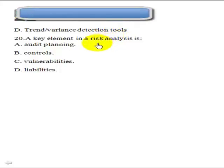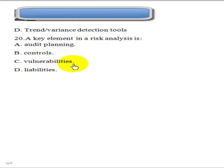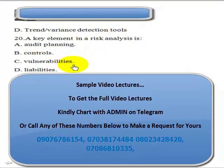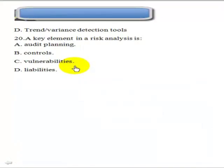Question 20: The key element in a risk analysis is vulnerability. This is a tricky question between control and vulnerability, but the answer is C — vulnerability — because before you can talk about control, you must first identify vulnerability. Risk analysis starts with an inventory of assets, then identifying the vulnerabilities of those assets, before identifying the threats that can exploit those vulnerabilities.